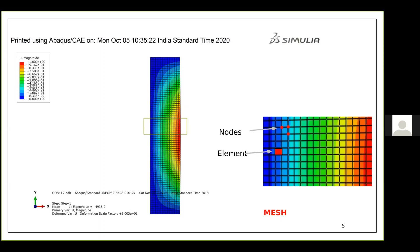You are dividing your entire structure into finite elements and doing computation over these small elements. Depending upon your structure, there can be thousands of nodes and elements. This is a very simple structure — just a rectangular plate — but complex models will have far more.